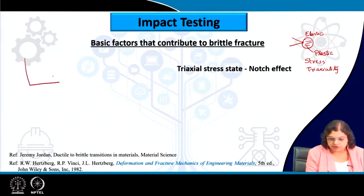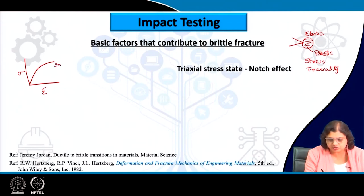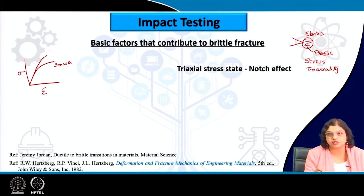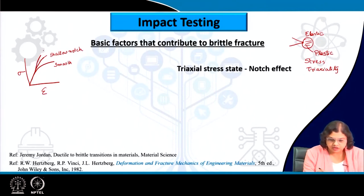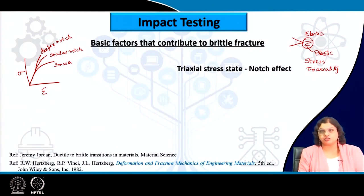If we draw the stress-strain curve for a regular material with a smooth specimen, when there is a notch we see an enhancement in the yield strength and reduction in the ductility. If we increase the notch severity — say this is a shallow notch and we increase the length or decrease the tip radius — we see even further enhancement in yield strength and reduction in ductility; this is for a deeper notch. Not only the presence of the notch, but the geometry and total size of the notch are also very important in altering the overall fracture toughness of the material.